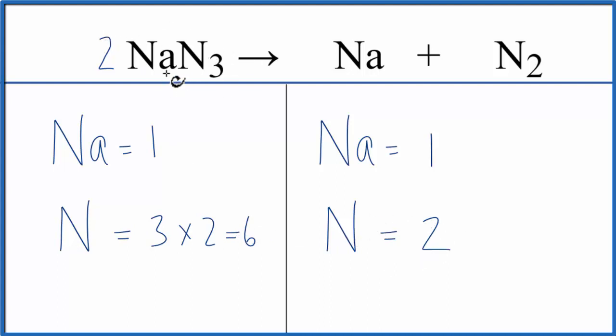But the 2, it applies to everything, so I have 1 sodium times the 2. That'll give me 2 of those. So let's fix the nitrogens.